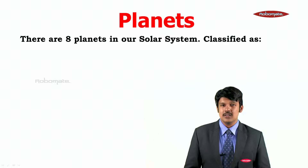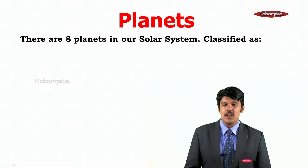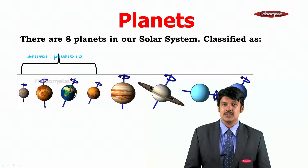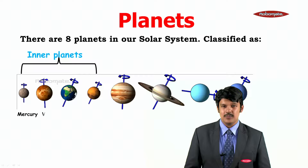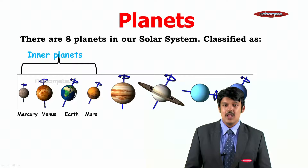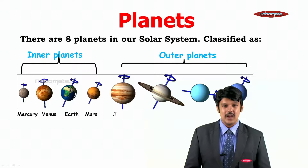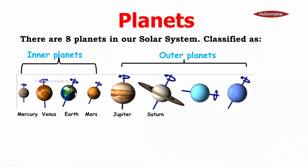Let us now learn about planets in detail. Students, there are eight planets in our solar system. We can classify them into two categories. The first four planets are called the inner planets: Mercury, Venus, Earth, and Mars. The remaining four planets are called the outer planets: Jupiter, Saturn, Uranus, and Neptune.